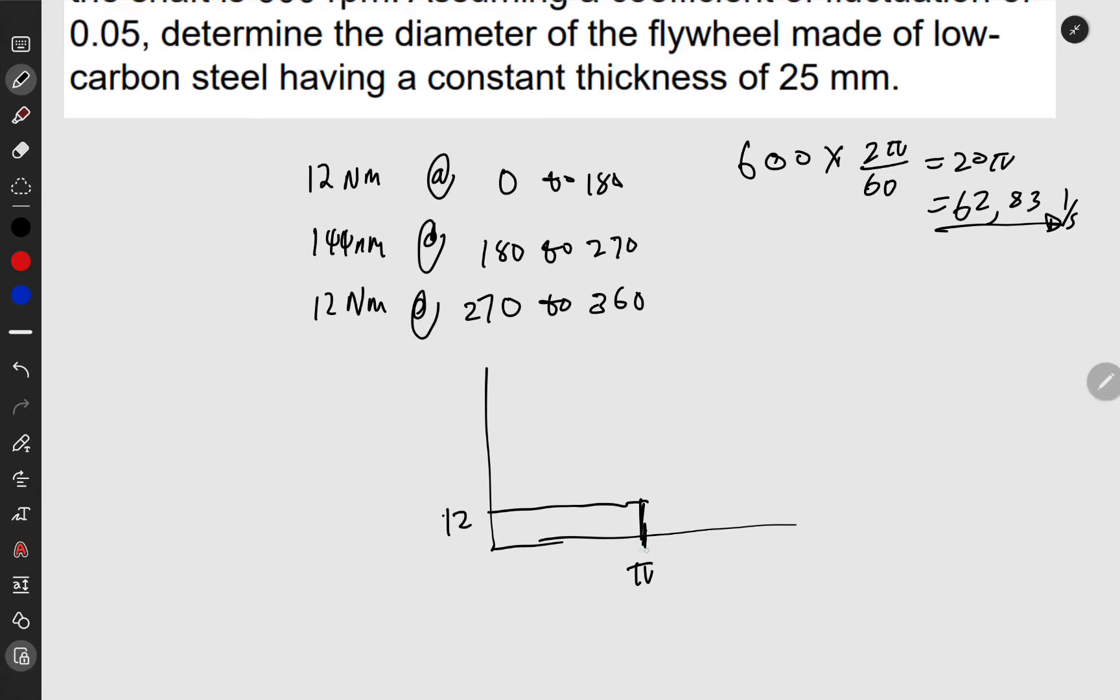From that we'll be having 144, which is quite a big number compared to 12. From 180 to 270, if we convert to radians, that would be 3π/2.